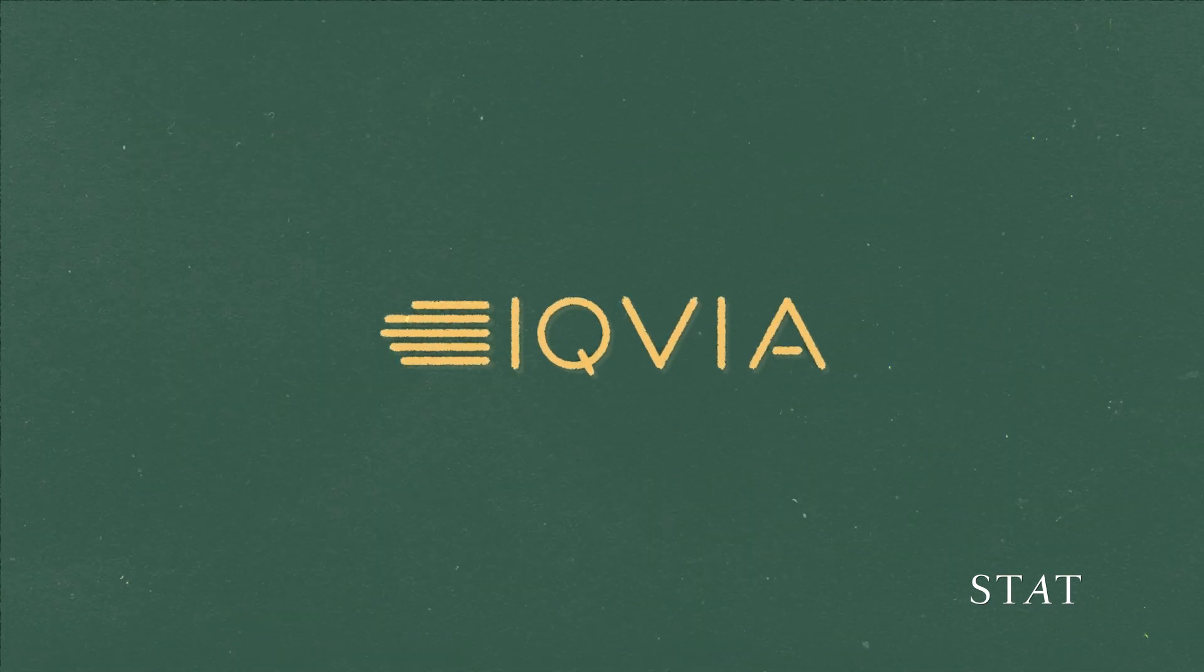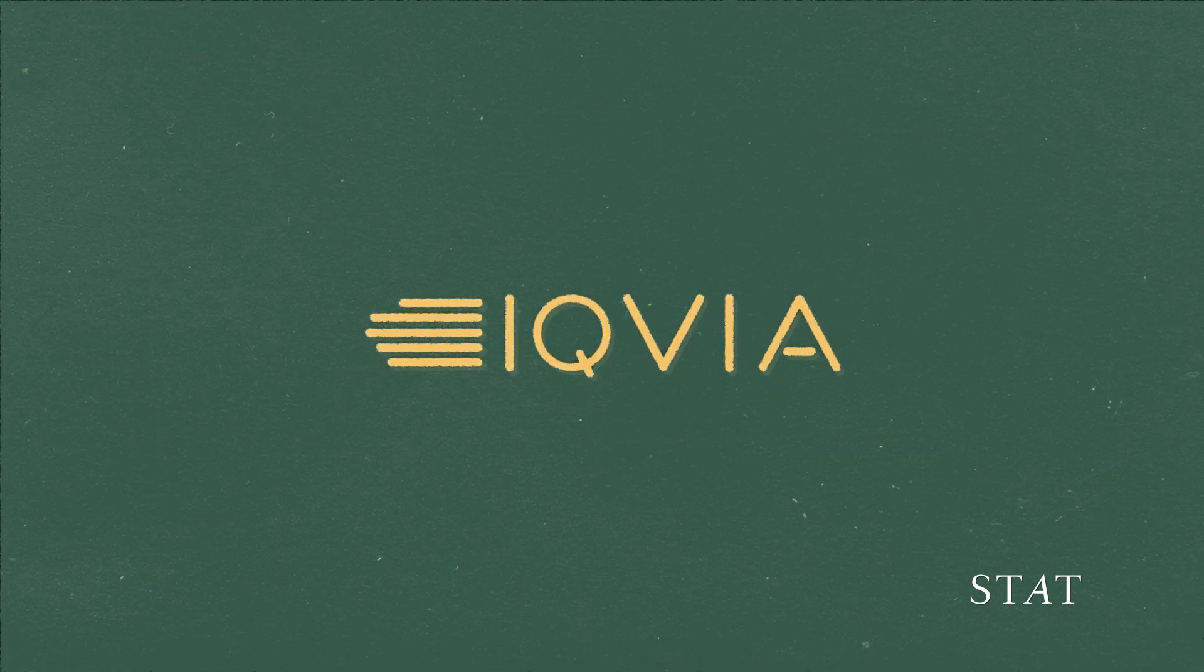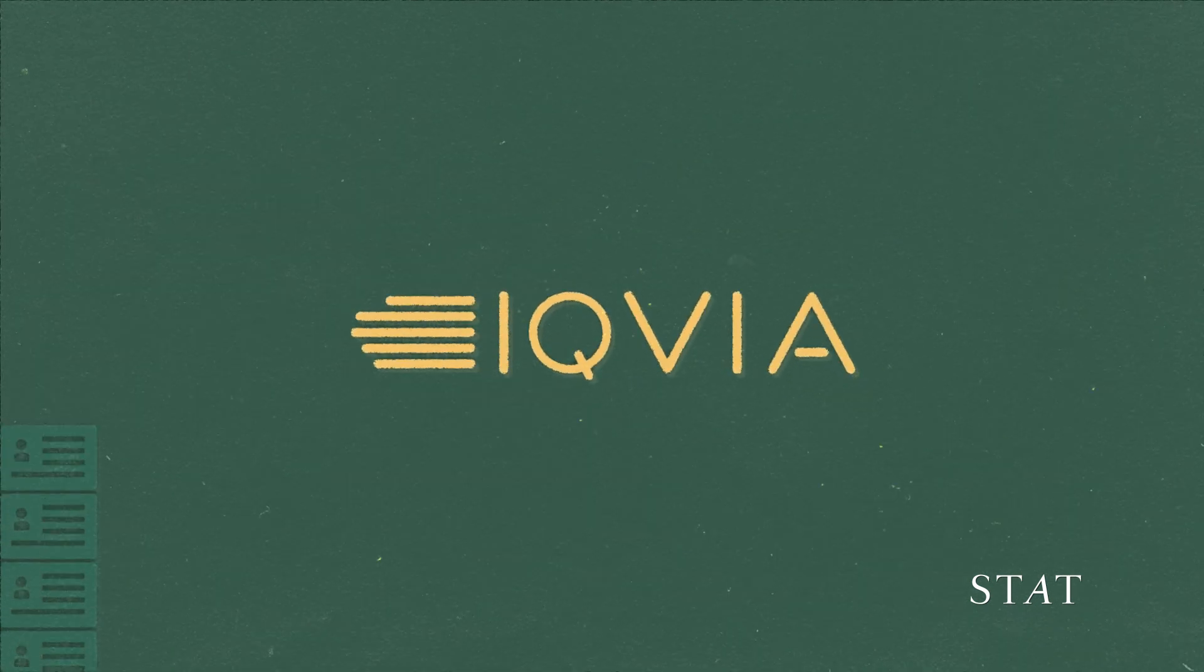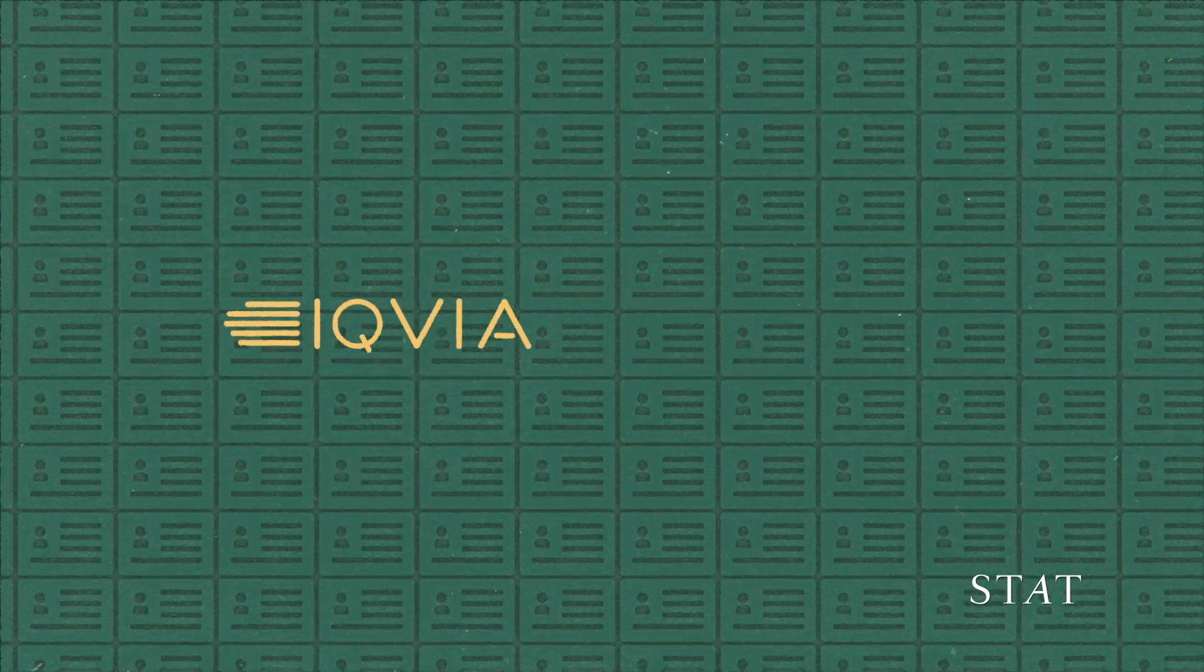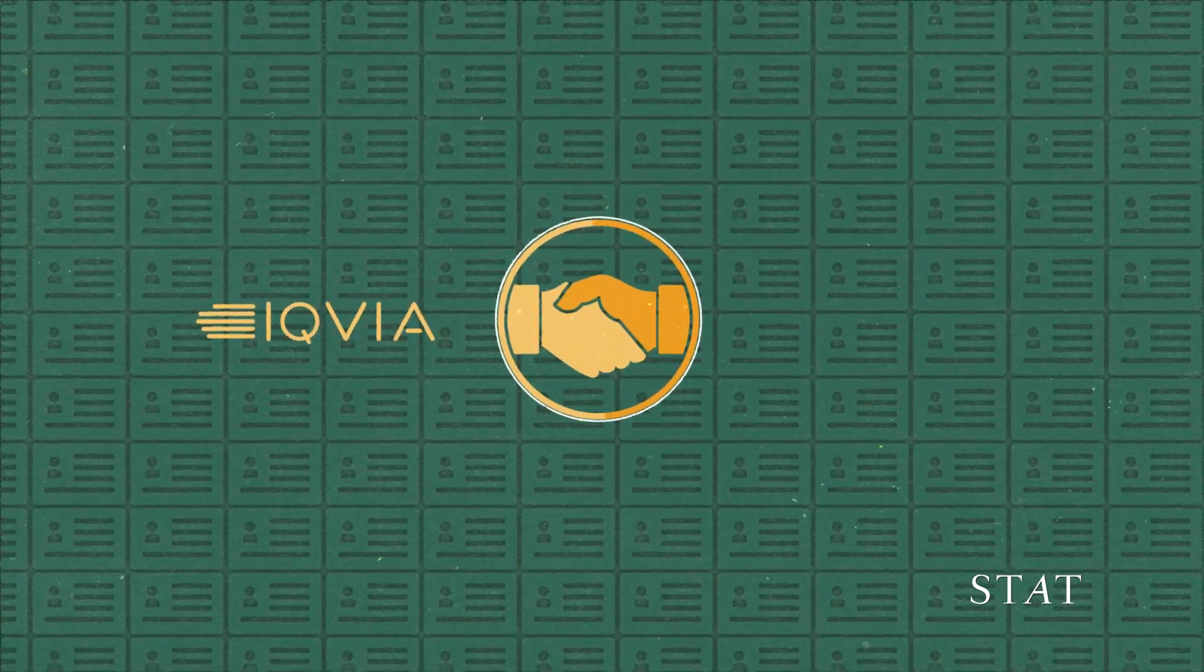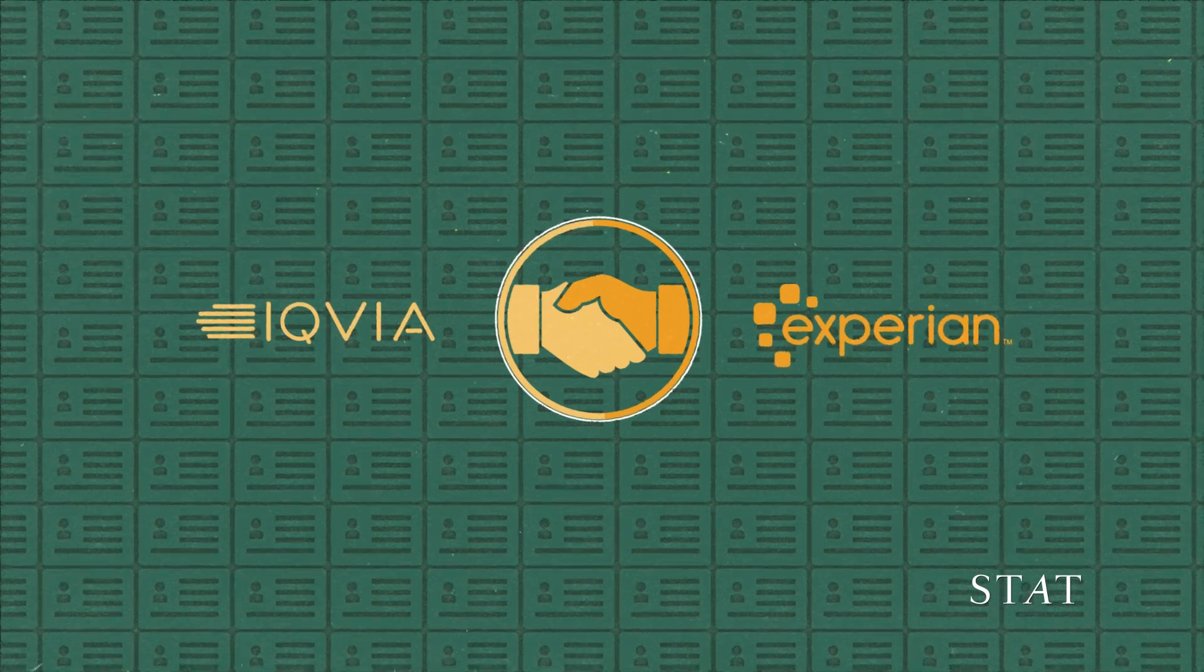A STAT investigation found that IQVIA, a company that collects and analyzes health data, has compiled highly detailed financial and demographic information on more than 120 million Americans through a partnership with the credit reporting company Experian.